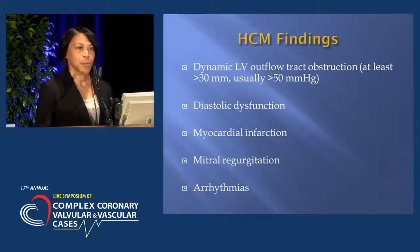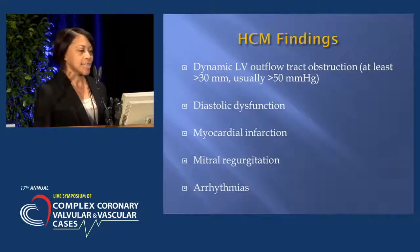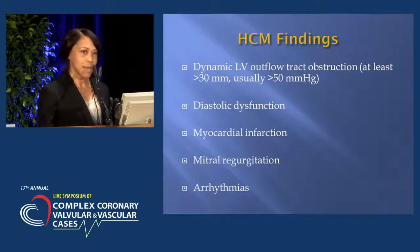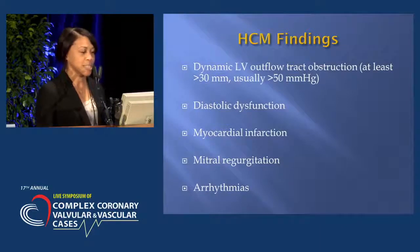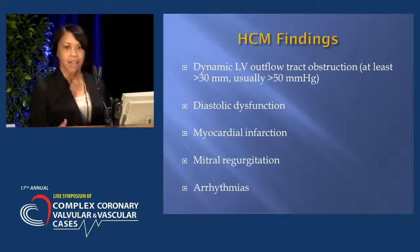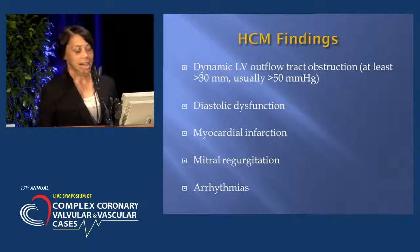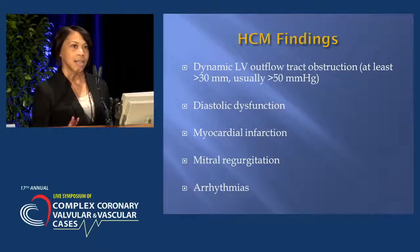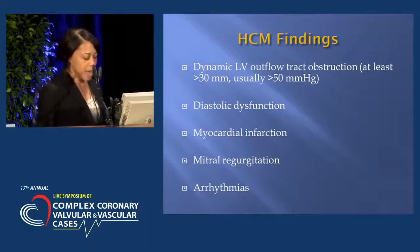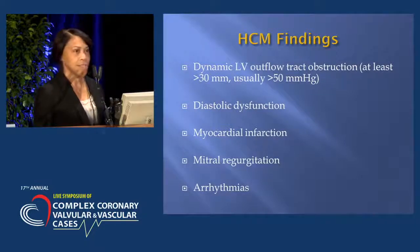In hypertrophic cardiomyopathy findings, you have dynamic left ventricular outflow tract obstruction — the gradient is usually greater than 30 millimeters, but usually greater than 50 millimeters. Diastolic dysfunction can result in the development of atrial arrhythmias such as AFib, ventricular arrhythmias such as V-tach and VFib, chest pain, and sudden cardiac death, which is rare but usually occurs during vigorous physical activity.